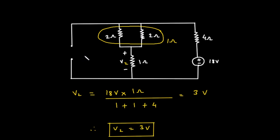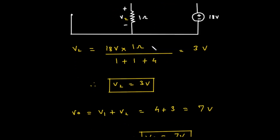This simplifies things tremendously. We are left with a single simple series circuit loop. The 18-volt source is driving current through three things in series: the 4-ohm resistor, the 1-ohm resistor where we want V2, and the parallel combination of the two 2-ohm resistors. We already know the equivalent resistance of those parallel resistors is 1 ohm. So the total resistance is 4 + 1 + 1 = 6 ohms.